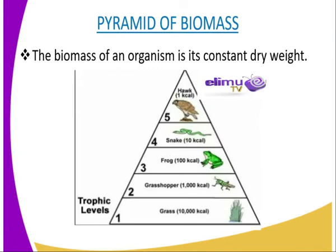Now we can look at the pyramid of biomass. The biomass of an organism is its constant dry weight. When biomass measurements are carried out in a given ecosystem, the statistical representation also produces a pyramid-shaped histogram. The producers have the highest biomass per unit area, followed in decreasing order by primary consumers, secondary consumers, tertiary consumers, and quaternary consumers. From our diagrammatic representation, the grass has energy of around 10,000; the grasshoppers have decreased to 1,000; the frogs have decreased to 100; the snakes have decreased to 10; and the eagle has reduced to 1. The energy is reducing as you move from the producers up to the quaternary consumers.